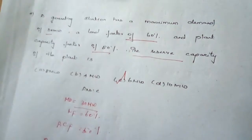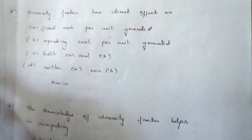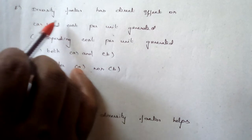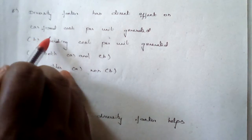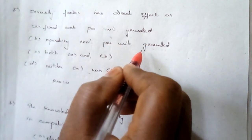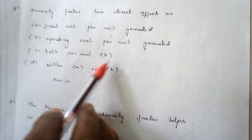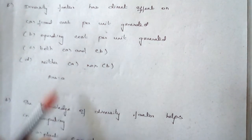We have discussed finding load factor, average load, maximum demand, plant capacity factor, and reserve capacity. Additionally, the diversity factor has a direct effect — the diversity factor must always be greater than unity, and it has a direct effect on the fixed cost per unit generated. That is the correct answer for question number five.